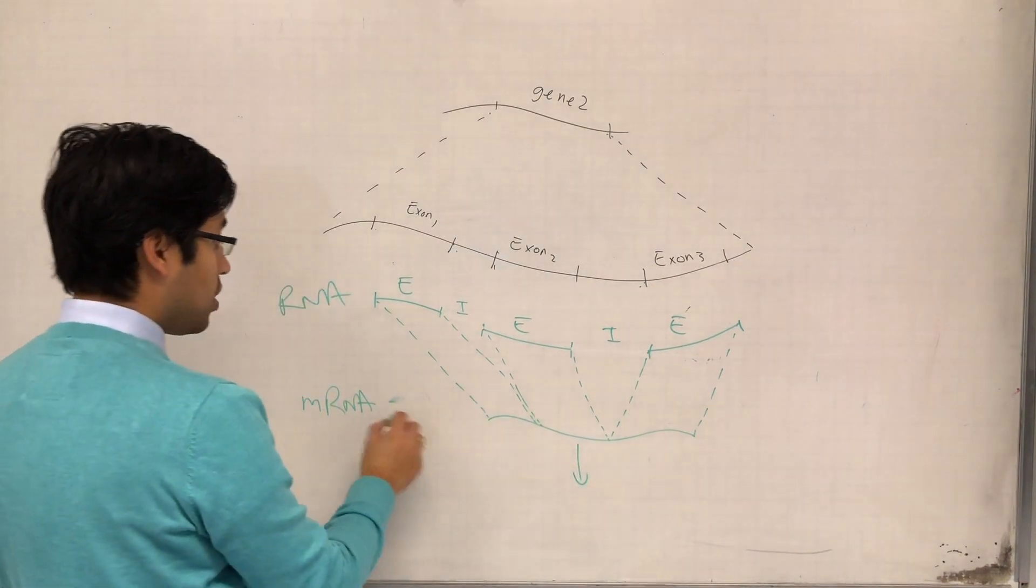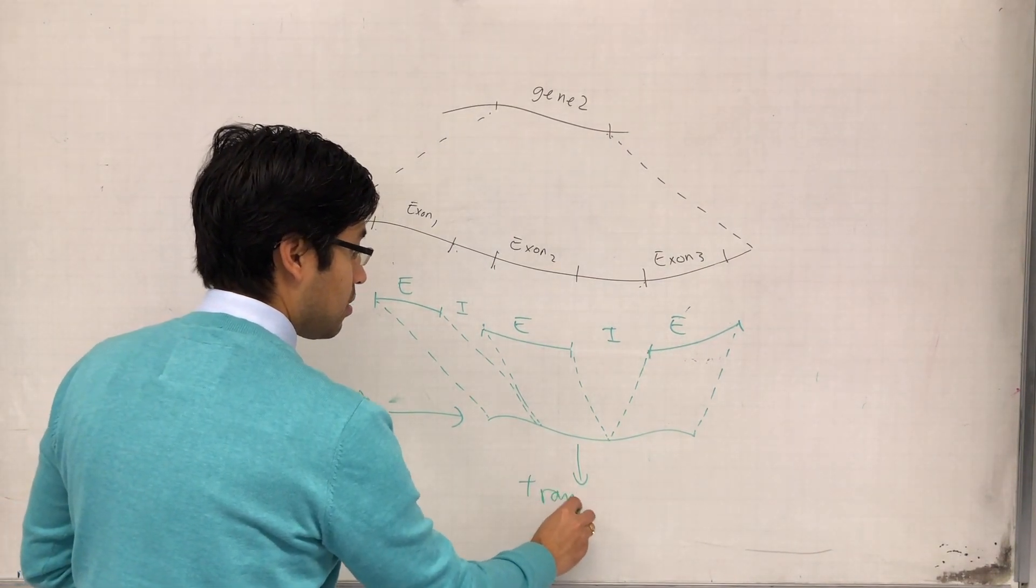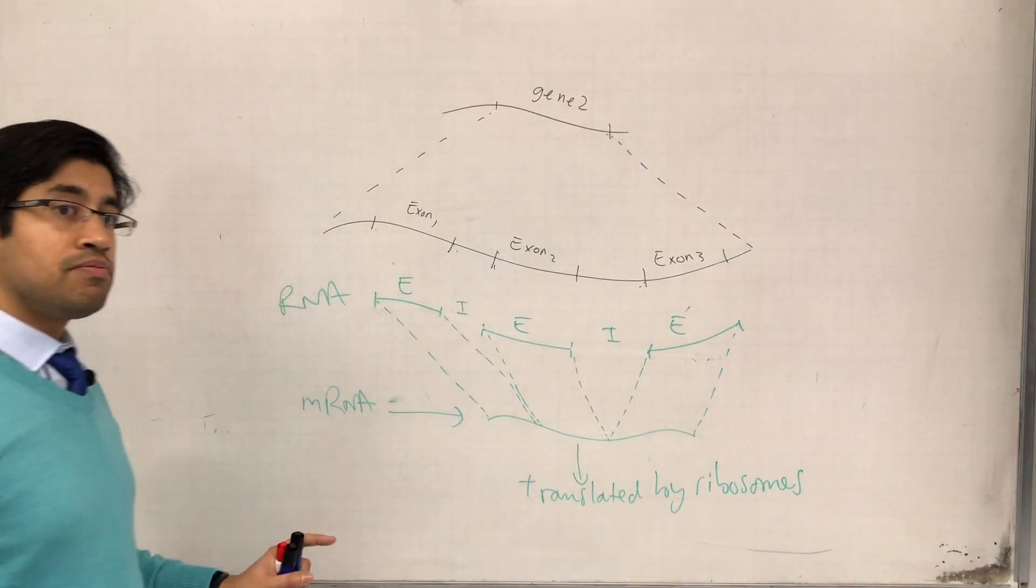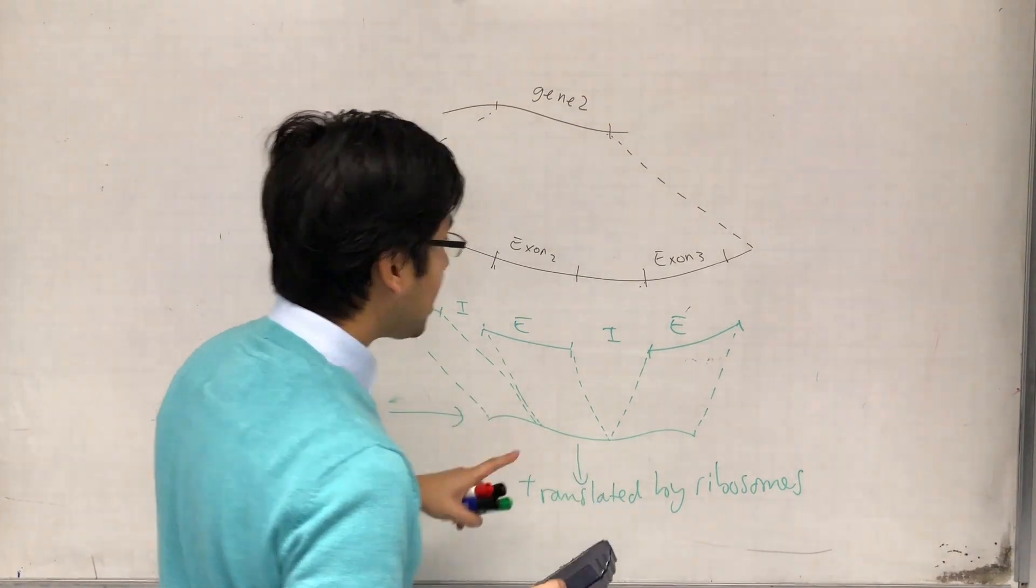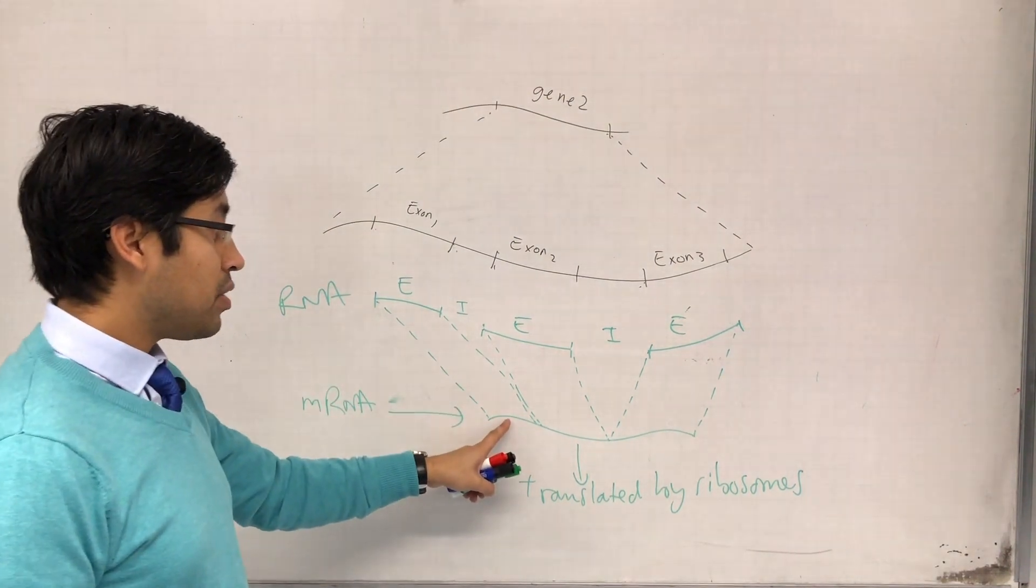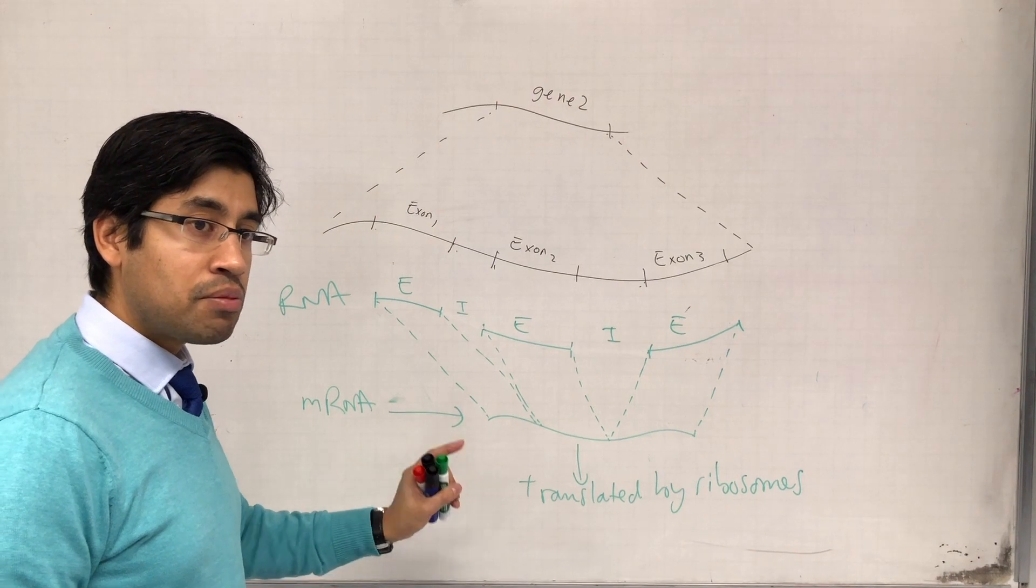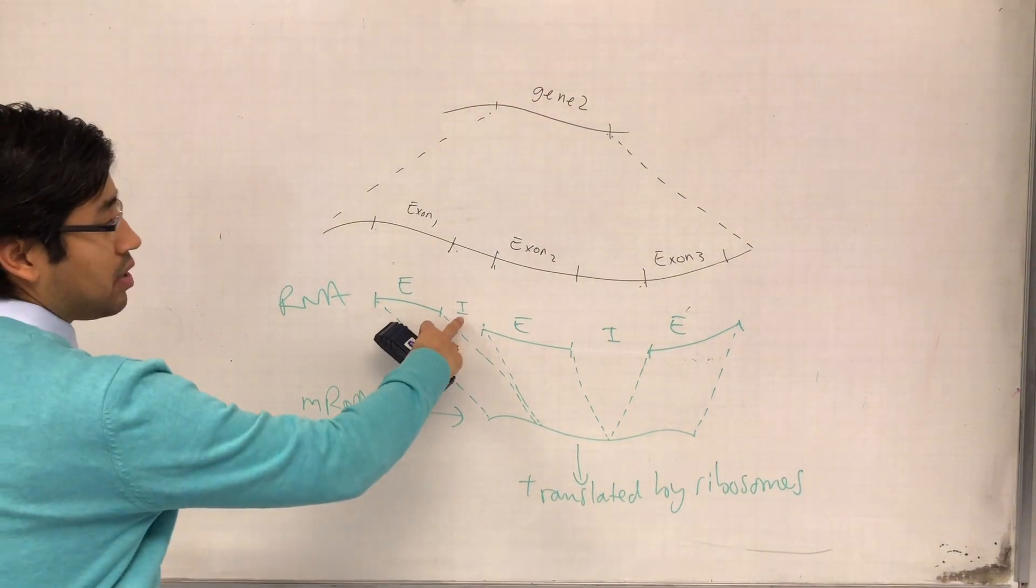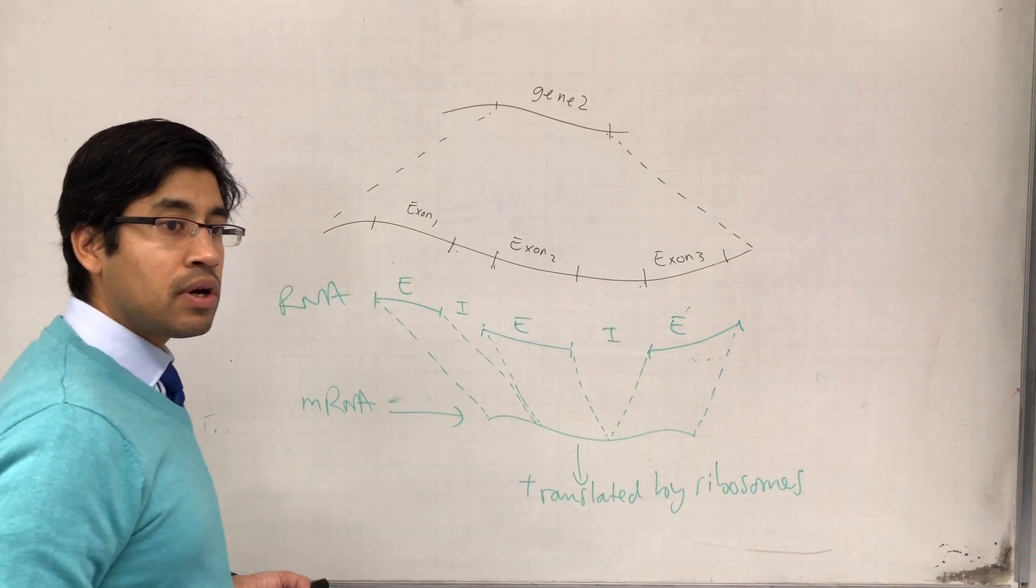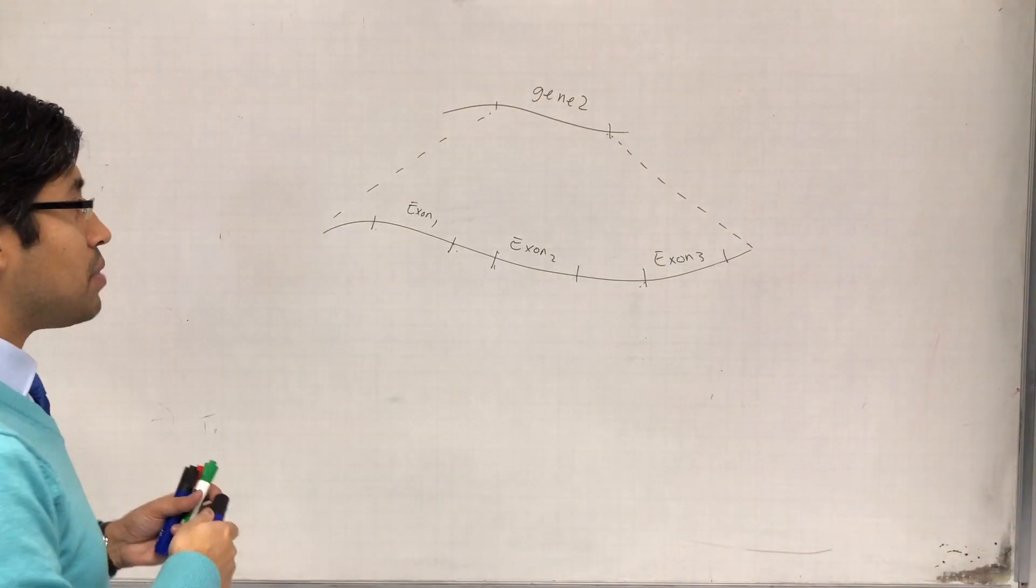The introns were removed and then the three remaining exons were joined together, and this is what we call the mRNA. It's the mRNA that gets translated by ribosomes. Exons contain the information or the base sequences that contain the information for codons, which will eventually result in information to join amino acids together, whereas introns never affect the protein structure because introns were never read by ribosomes.